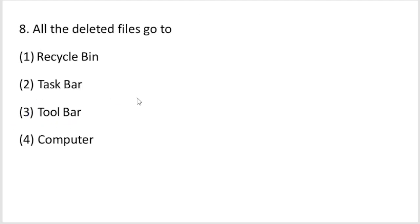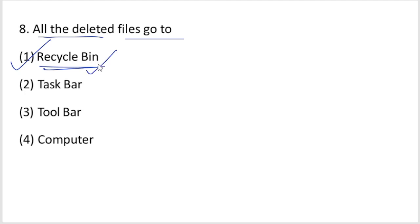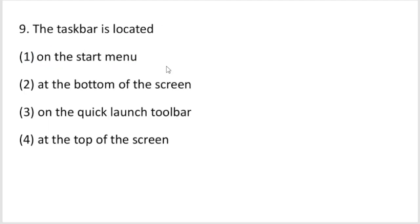All deleted files go to the Recycle Bin. When you delete a file it is not permanently deleted — it goes to the Recycle Bin. From there you can restore it. If you want to permanently delete, press Shift+Delete. The Recycle Bin stores deleted files so you can restore them later.